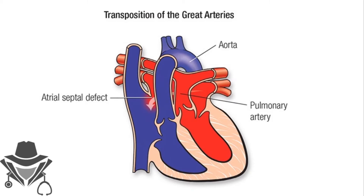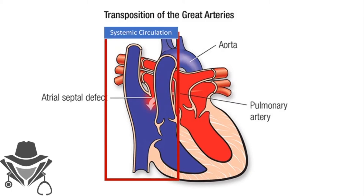This creates two isolated blood circulations. First, blood comes from the body to the right atrium, right ventricle, and aorta, back to the body — an isolated systemic circulation. Second, blood comes from the lungs to the left atrium, left ventricle, and pulmonary trunk — an isolated pulmonary circulation.